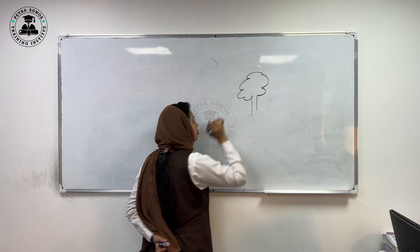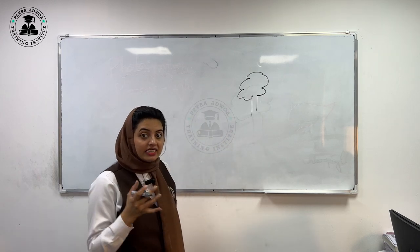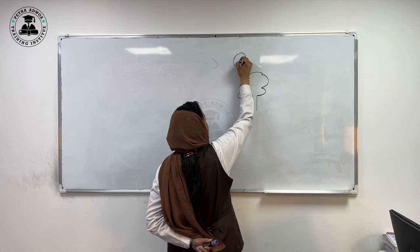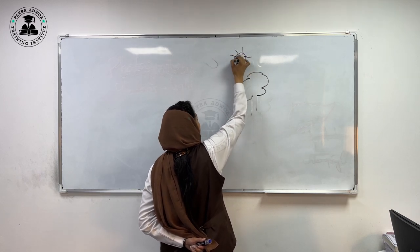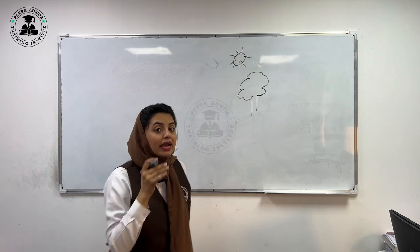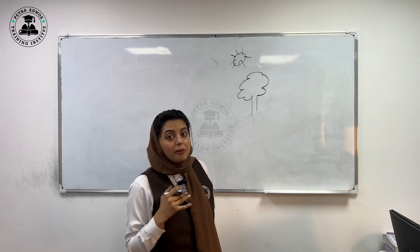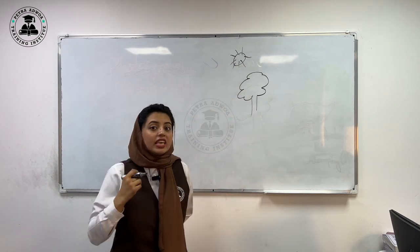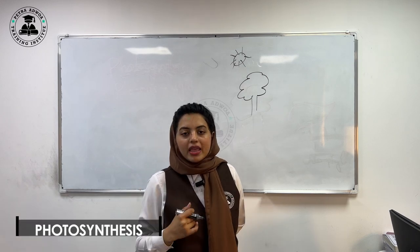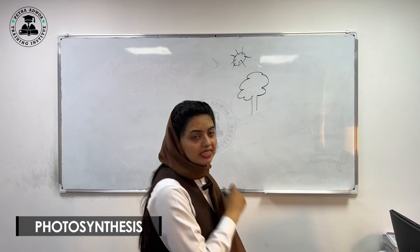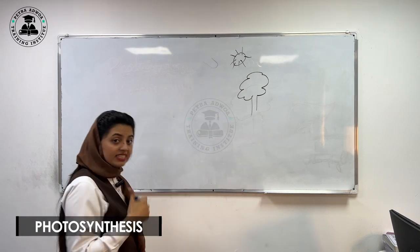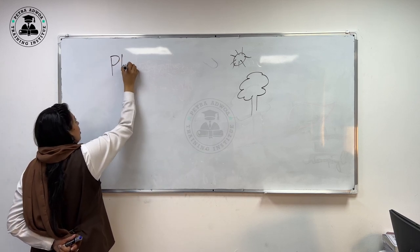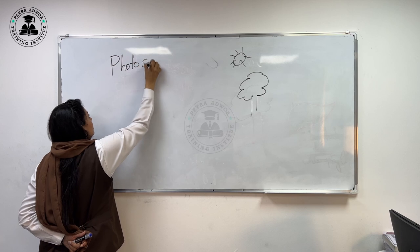Plants are the superheroes because they have their magical power. They can convert the sunlight energy into the chemical energy by the procedure by which the plants can convert the light energy into the chemical energy. We call that photosynthesis. So today we are going to talk about photosynthesis.